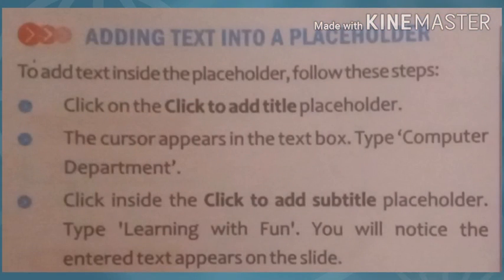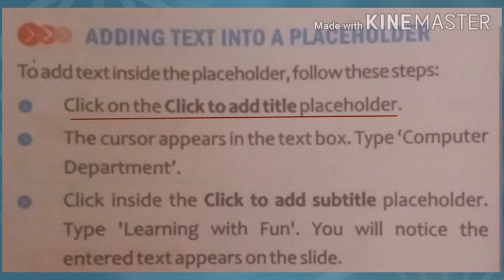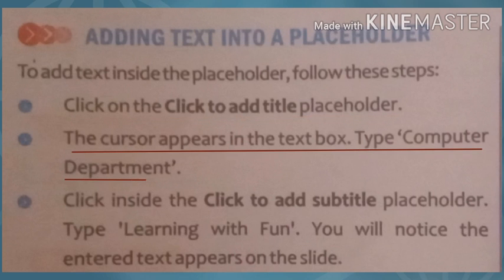Now let's see how to add text in a placeholder. To add text in a placeholder, follow these steps: first, click on the 'Click to add title' placeholder. सबसे पहले जहाँ पे 'Click to add title' placeholder होता है, वहाँ पे आप click कीजे। The cursor appears in the text box — type 'Computer Department'.